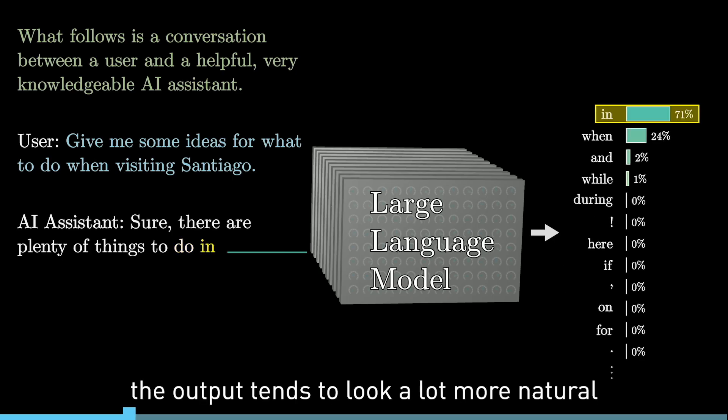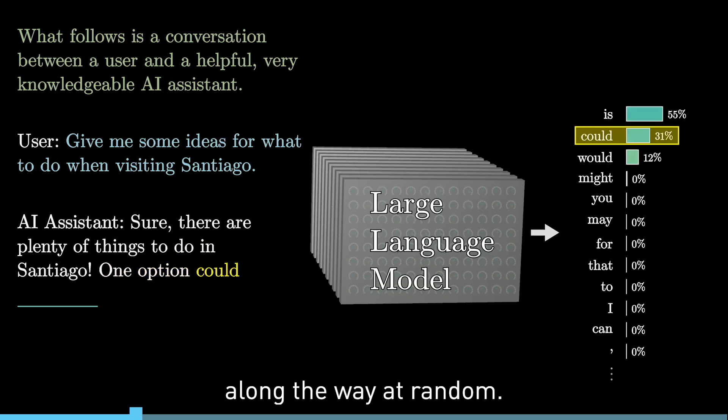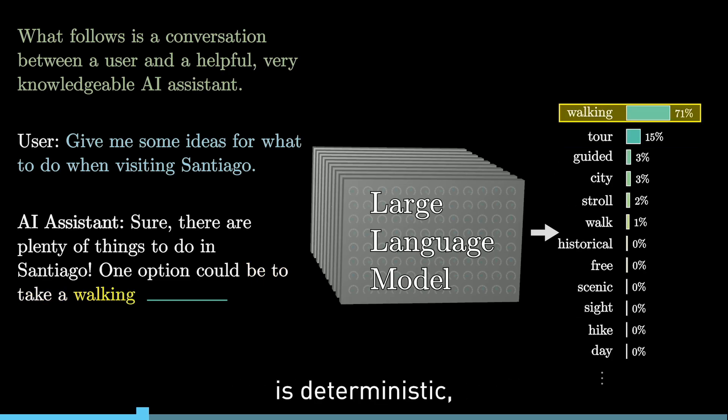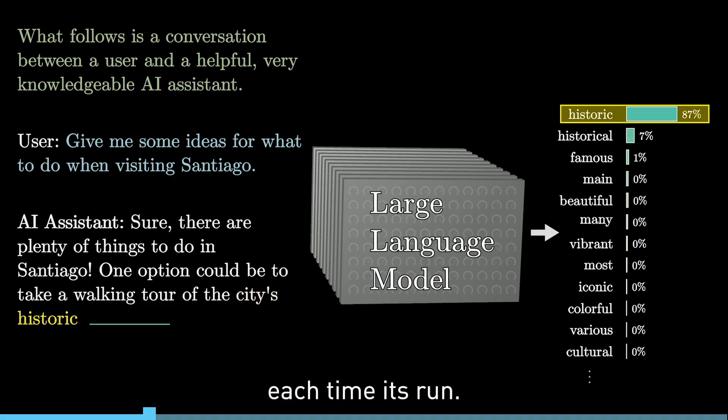In doing this, the output tends to look a lot more natural if you allow it to select less likely words along the way at random. So what this means is even though the model itself is deterministic, a given prompt typically gives a different answer each time it's run.